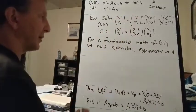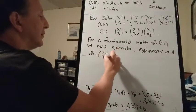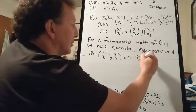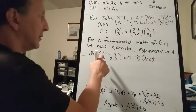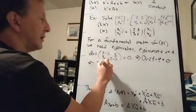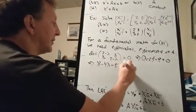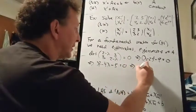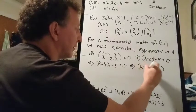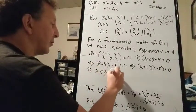We take det(A minus lambda I) = 0: det([2−λ, 3; 3, 2−λ]) = 0. That means (2−λ)² − 9 = 0, which expands to λ² − 4λ + 4 − 9 = λ² − 4λ − 5 = 0. We factor that as (λ − 5)(λ + 1) = 0, so lambda is either −1 or 5.